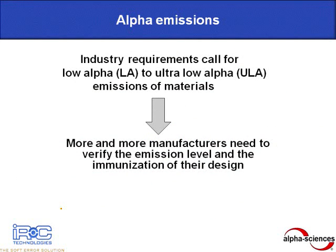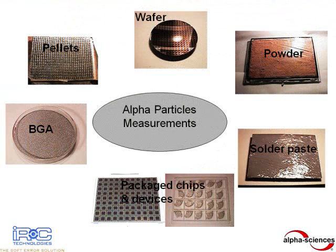Our team has the ability to measure and report the alpha emission of materials based on over 25 years of providing alpha detection equipment and services. By constantly updating and improving the design and materials of the equipment, we can measure nearly any type of sample, from complete IC devices down to individual materials in the form of sheets, pellets, silicon wafers, pastes, and powders. If it can be placed in the counting chamber, it can be measured, and no sample preparation is required other than placing the sample onto the sample tray and into the counting chamber.